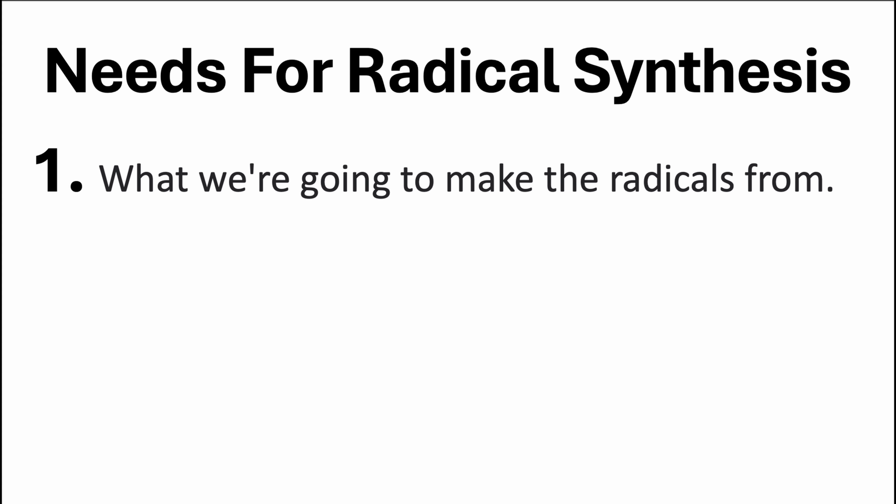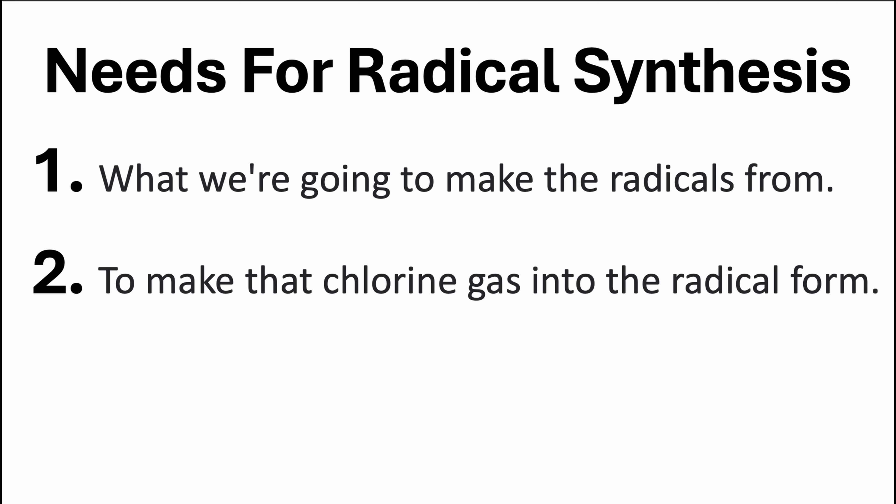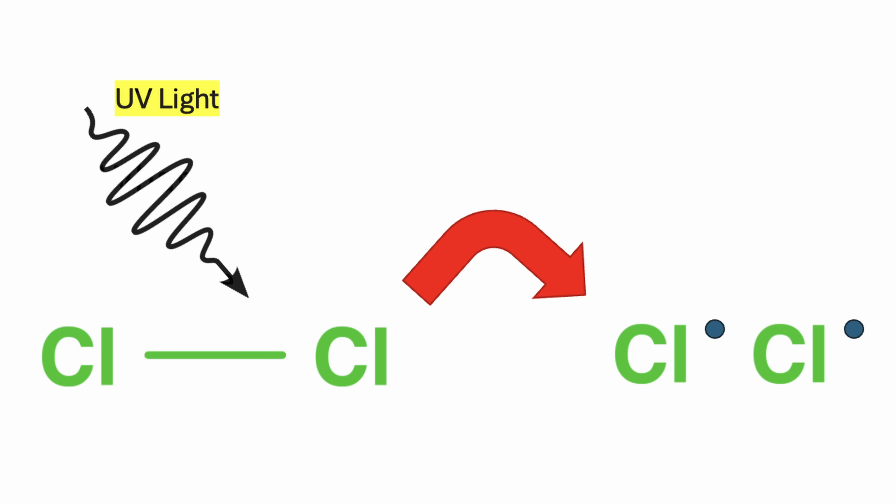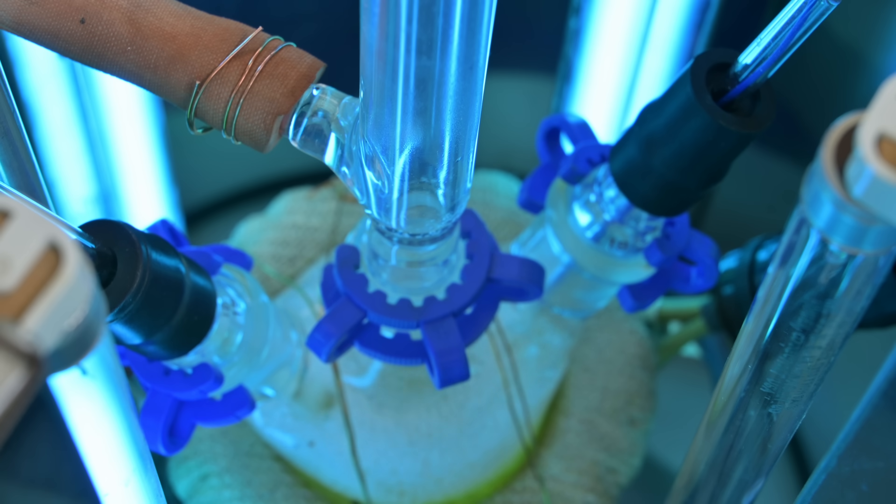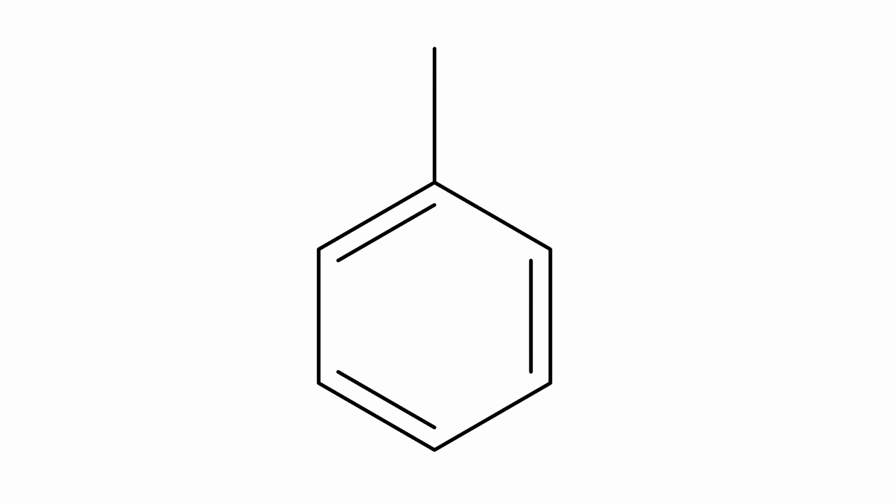For radical synthesis, we need three things. The first is what's going to be made into radical form. In this case, we want to make benzyl chloride, so we'll be using chlorine gas. Next, we need to make the chlorine gas into radical form, which means we need energy source to break the bonds of chlorine. We will use UV light. This can come from a few places, like the sun or UV bulbs. The last thing and final thing we need is material in which the chlorine will react with. In this case, toluene.